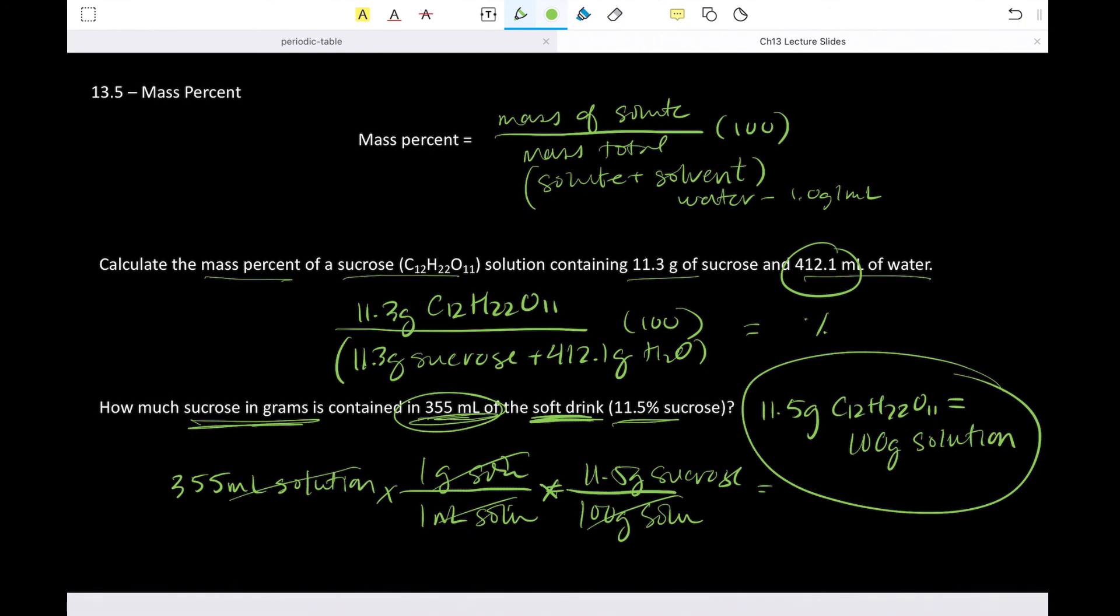And for most dilute solutions, it is true that the density stays about that of water. If it strays from water, if it is so concentrated that the density changes, a problem will alert you to that. Because again, the only density you have to know is the density of water. All right.